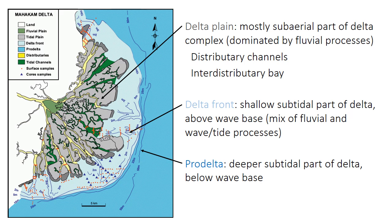The sub-aerial or above-water part is called the delta plain. It includes the river channels, which are called distributary channels. It may include shallow bays between those channels called interdistributary bays. It may include beaches or tidal flats or tidal channels, depending on the relative importance of fluvial, wave, and tidal processes on the delta.